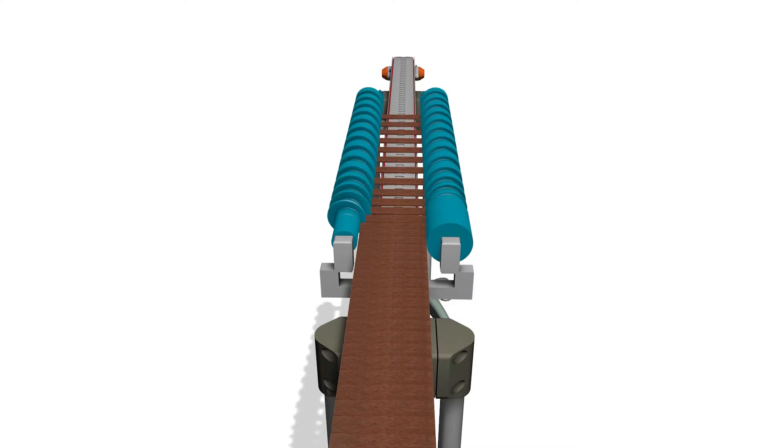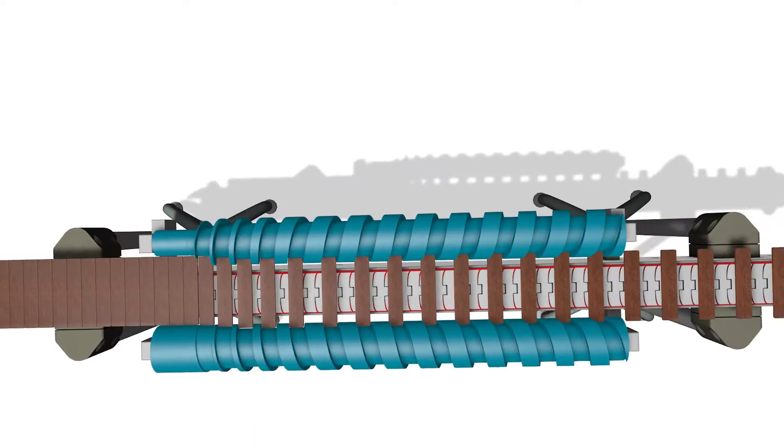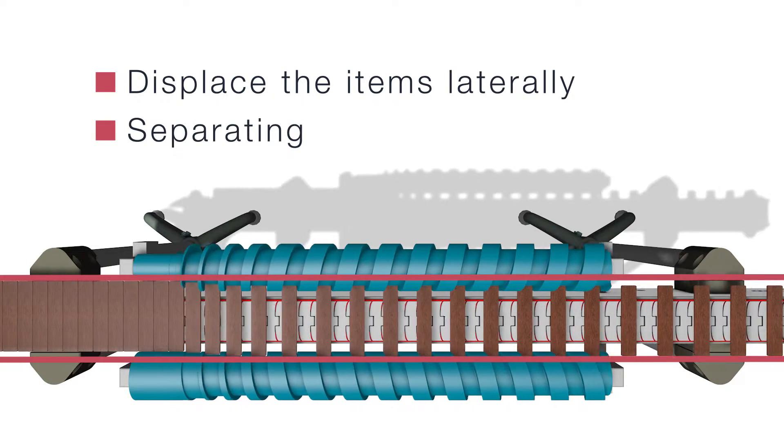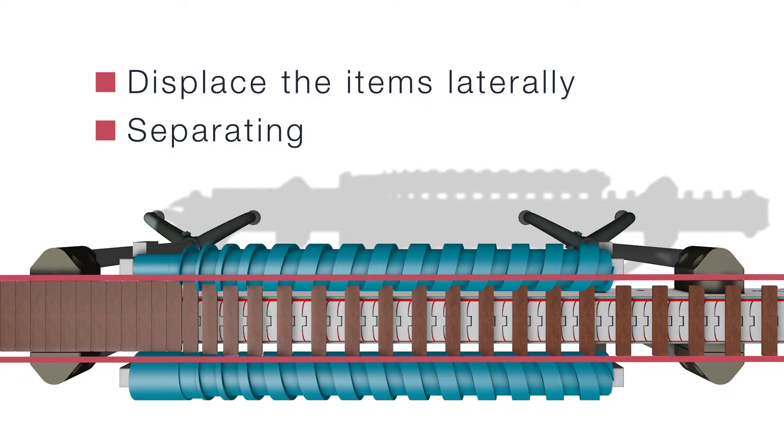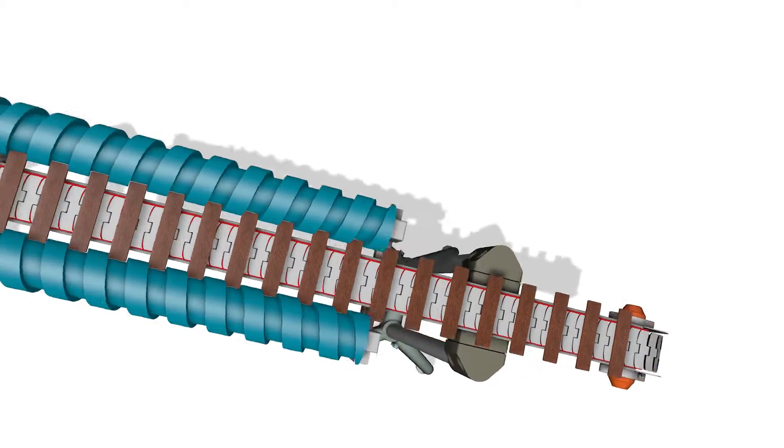Here, the previous process delivers the items on one side of the belt, and the screw conveyors displace the items laterally, while simultaneously separating them with a given spacing, making them ready for the next production step.